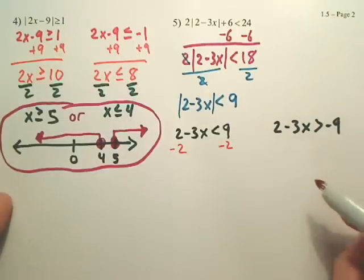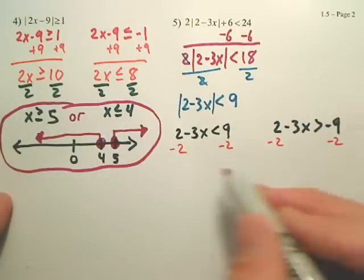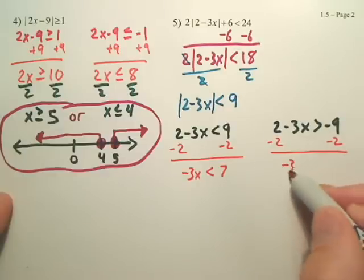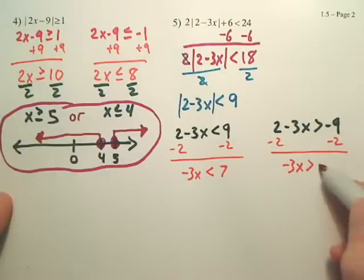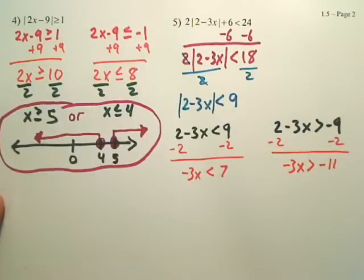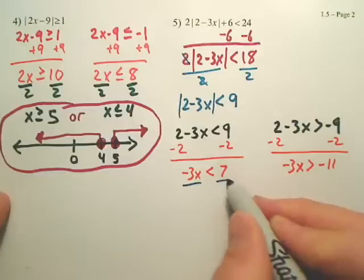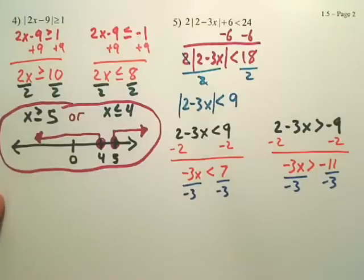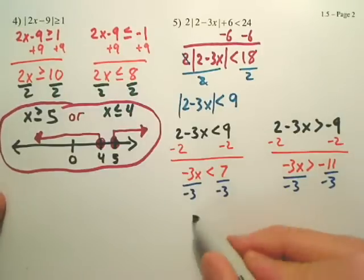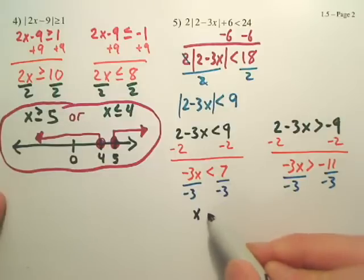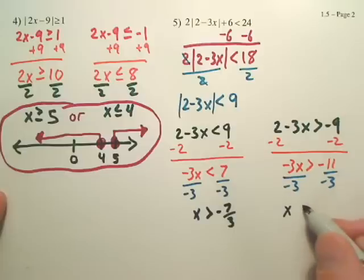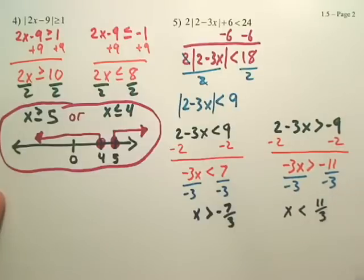So, we minus the 2. This one's going to be negative 3x is less than 7. This one's going to be negative 3x is greater than negative 11. And then we have to divide by negative 3. My answer, x. Do we switch the sign? Yes, because we divided by a negative. And my other one, do we switch that? Because we divided by negative. So that becomes a positive 11 over 3.